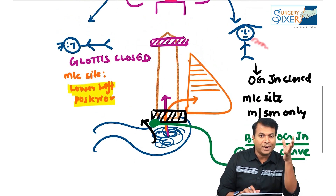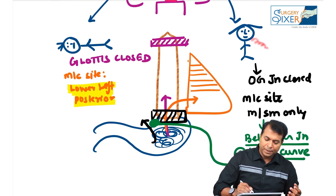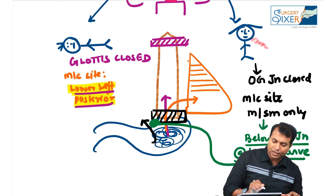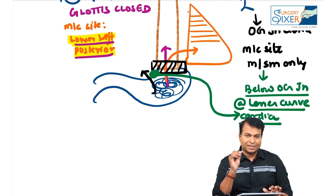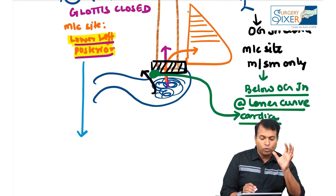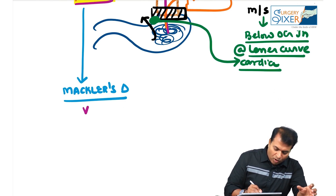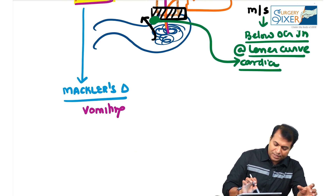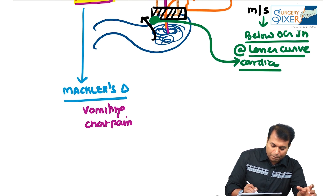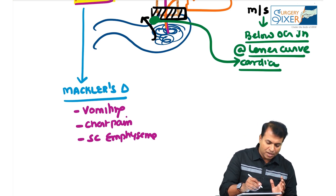So why is there a Boerhaave syndrome? In Ramu, the glottis is closed. In Somo, the LES is tightly closed. Ramu developed full thickness rupture of the lower left posterior esophagus. Since there is a full thickness tear in Boerhaave syndrome, the patient develops a triad known as Mackler's triad — vomiting, followed by chest pain, followed by subcutaneous emphysema.